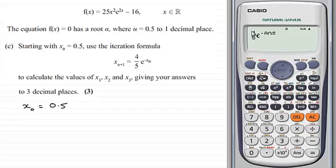So this is really four-fifths e to the minus a half at the moment. And so when I press equals, I get x₁, the next approximation. So, if we write that down here, we've got that x₁ equals 0.4852, and so on.